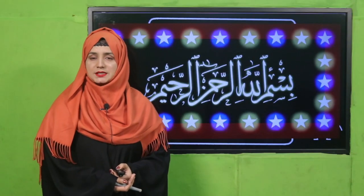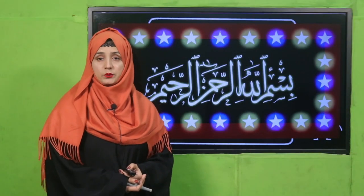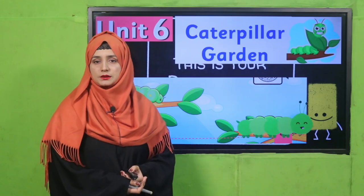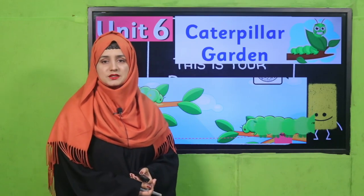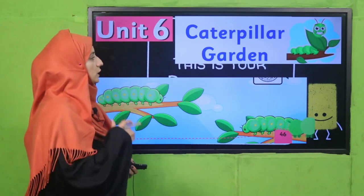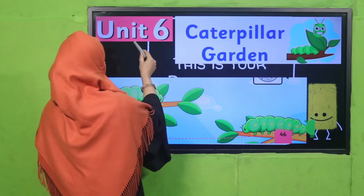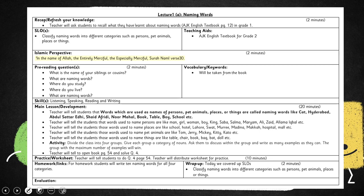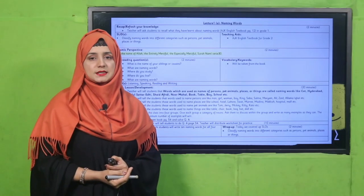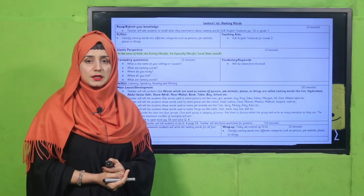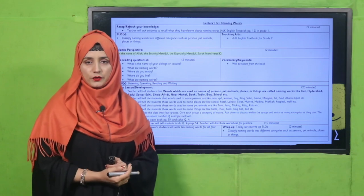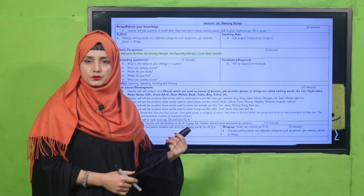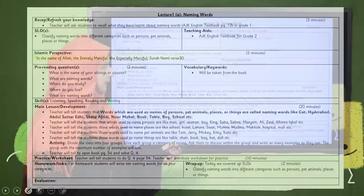Bismillahirrahmanirrahim. Assalamu alaikum, my dear students. How are you? I wish you will be enjoying the best of health. I welcome you to my class — English for Grade 2. We are learning Unit Number 6, and its title is 'Caterpillar Garden.' My dear fellow teachers, this lesson plan, PowerPoint presentation, and worksheet links are given below. You may click, download, or amend it for your ease. I'm going to deliver my lecture according to this lesson plan.